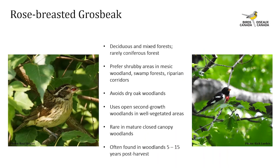Rose-breasted grosbeaks begin laying eggs in mid-May and incubate until mid-June; nestlings begin hatching in late May and all young fledge by late July. They occupy a wide variety of habitats in deciduous and mixed forests and are rarely found in coniferous forests. They prefer shrubby areas in mesic wet woodlands, swamp forests, and riparian corridors, and tend to avoid dry oak woodlands. They use open second-growth woodlands and respond well to light strip and selection harvesting, and are found in woodlands 5 to 15 years post-harvest that have allowed some vegetation to restore.